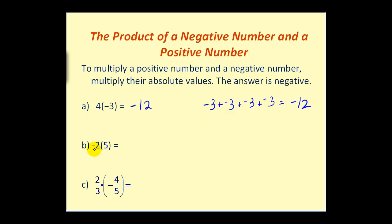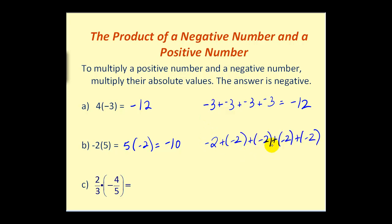On the second problem, negative 2 times positive 5 is going to equal negative 10. But we could rewrite this as 5 times negative 2, which is still negative 10. Now we can apply the same idea: we want 5 groups of negative 2, so we sum 5 groups of negative 2, which gives us negative 10.